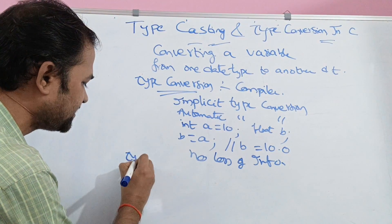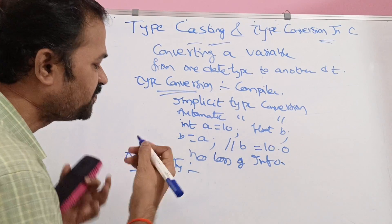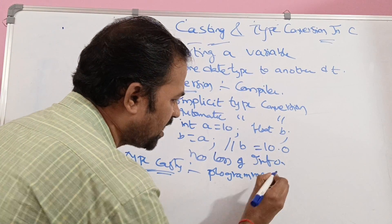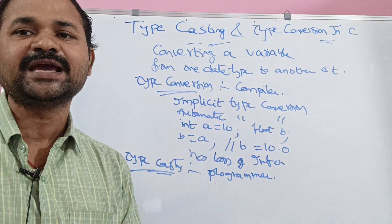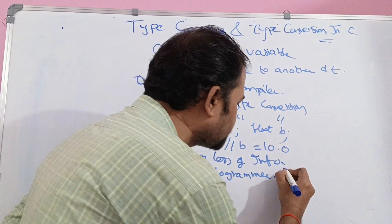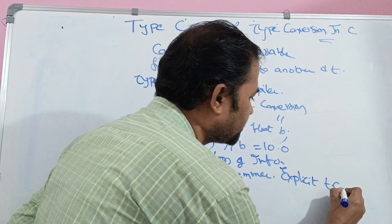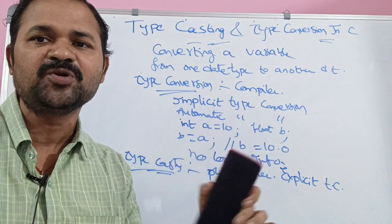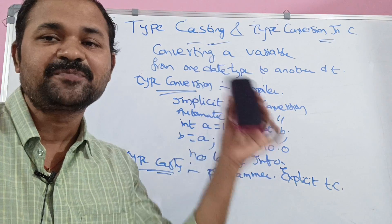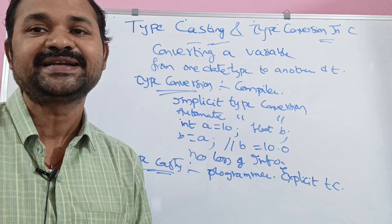Now let us see type casting. Type casting is done explicitly by the programmer — the compiler won't do any type casting. That's why this is also called explicit type casting. The type casting is explicitly done by the programmer.